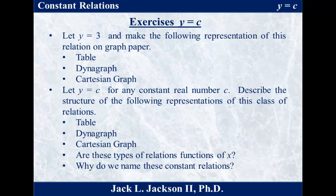Then I want you to think in general when we have y equals c, where c is some constant. For example, in this case c is 3, but it could be any constant real number c. Describe the structure you see in the table, the dynagraph, the Cartesian graph, and the formula as well. And are these types of relations functions of x, and why do we name them constant relations? See if you can think about those things for just a minute, then come back after you've constructed these things. Press pause now.